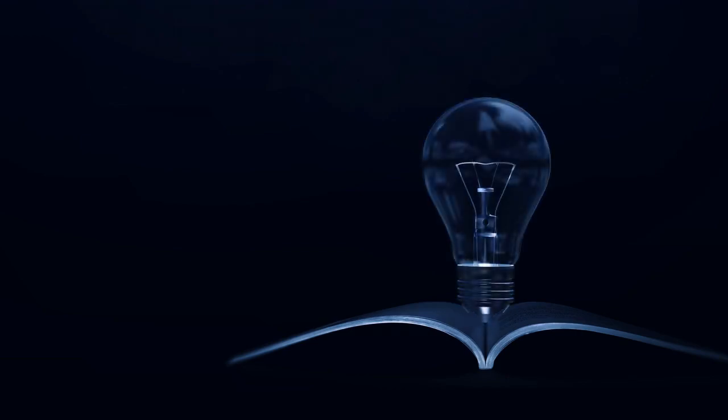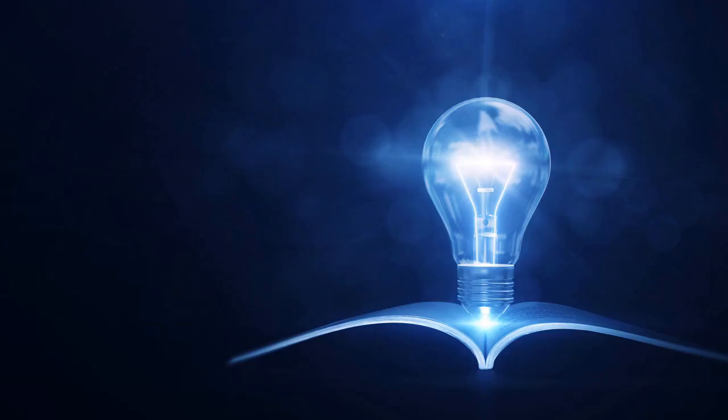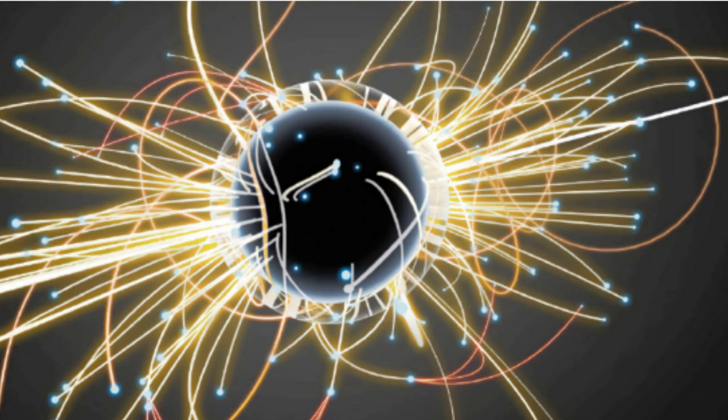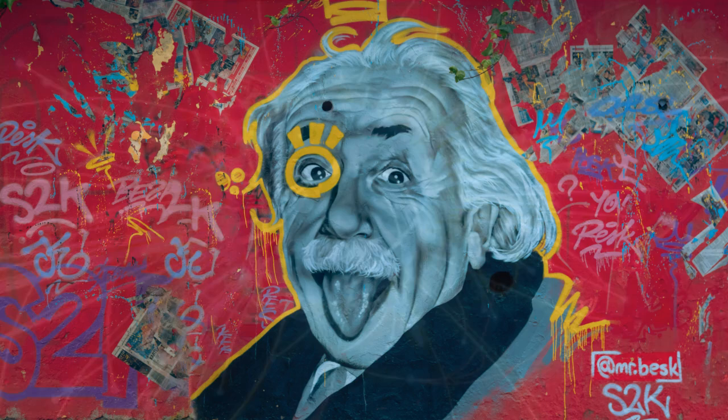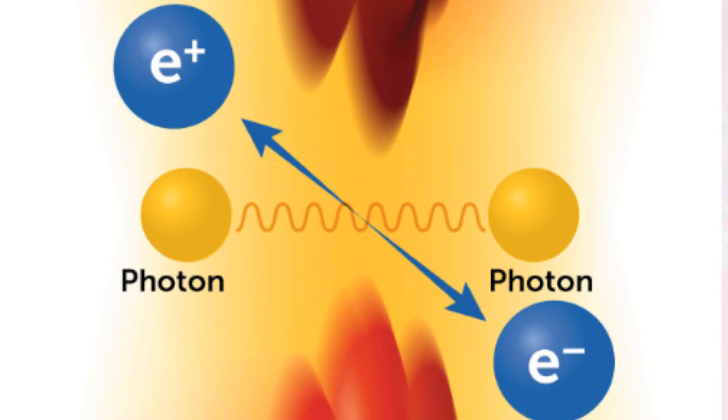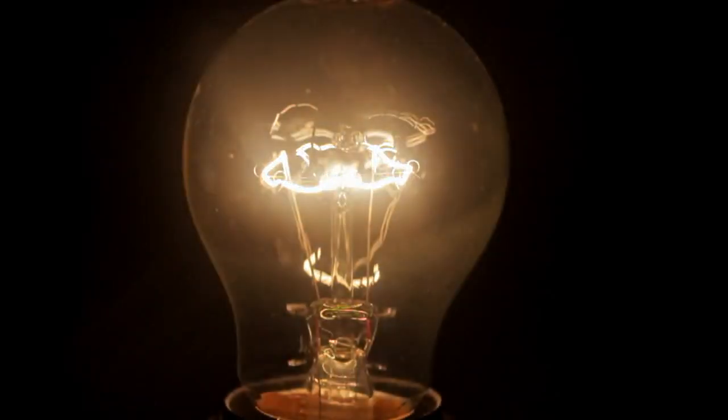The first big mystery came from light. Scientists had always thought light was a wave, but then experiments like the photoelectric effect proved otherwise. When light hit a metal surface, it knocked out electrons, but only if the light had enough energy. This didn't match what classical physics predicted. Albert Einstein solved this by suggesting that light isn't just a wave, it also behaves like tiny packets of energy called photons. This idea revolutionized our understanding of light and earned him the Nobel Prize.